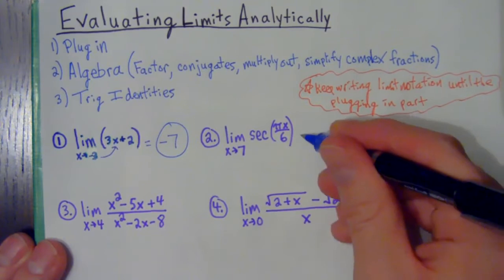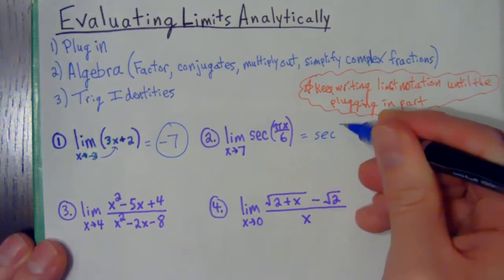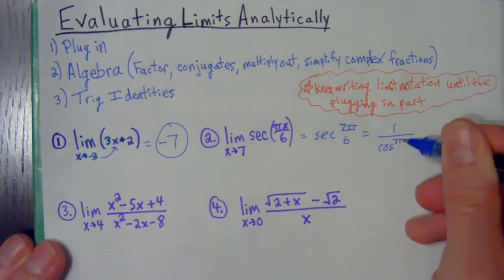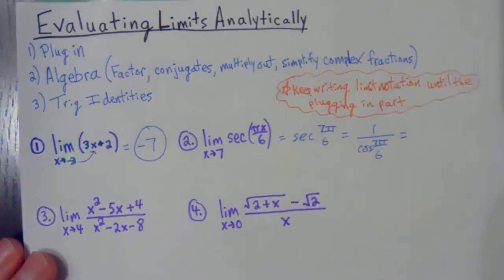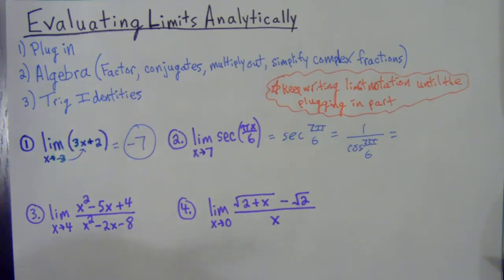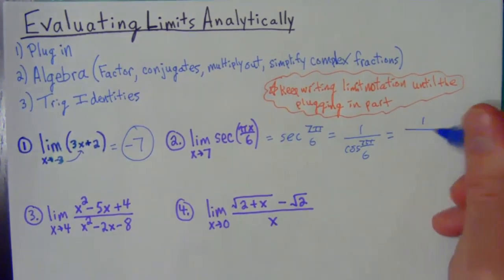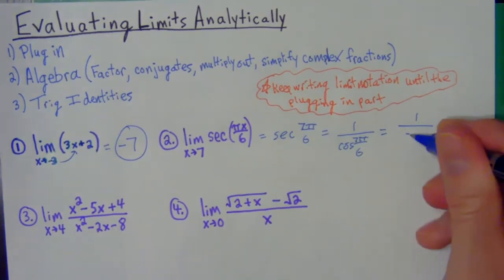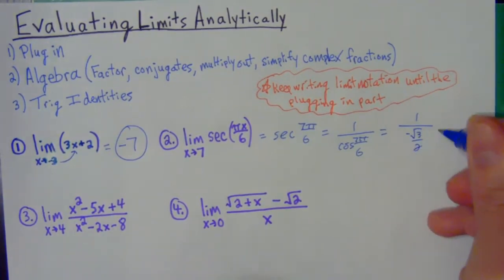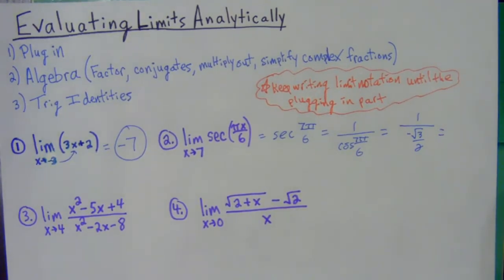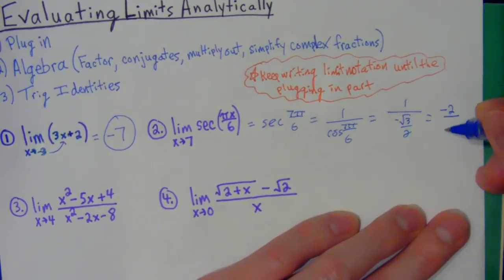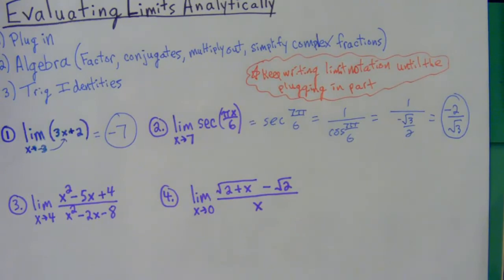Same thing here — I could plug that in. That's going to equal the secant of 7π/6, which is the same as one over the cosine of 7π/6. From pre-cal, cosine of π/6 is √3/2, but since you're in quadrant three — from 'all students take calculus' — cosine is negative in quadrant three. So it's negative √3/2, and one over that fraction gives us negative 2 over √3.